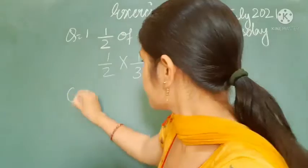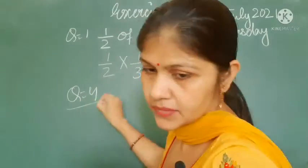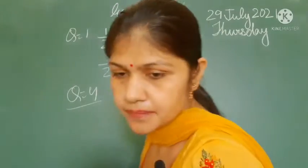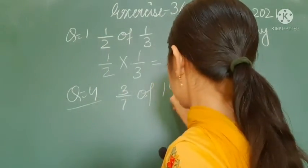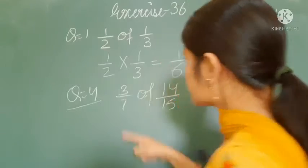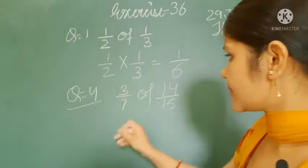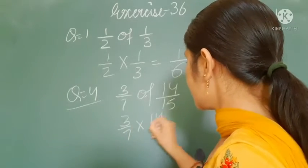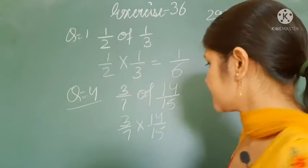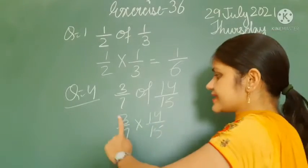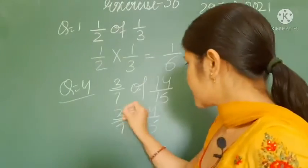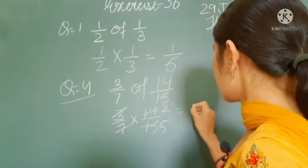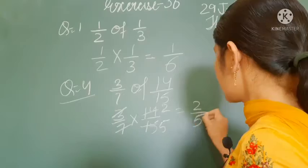Question number 4: 3 by 7 of 14 by 15. Here also, 'of' means multiplication, so this is 3 by 7 multiplied by 14 by 15. 15 cancels with 3 — 3 fives are 15 — and 14 cancels with 7 — 7 twos are 14. The answer is 2 by 5.